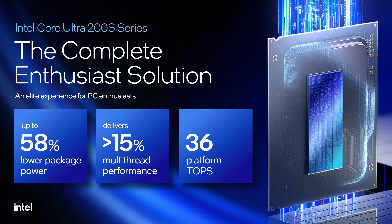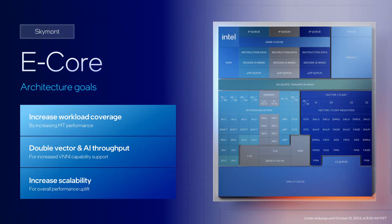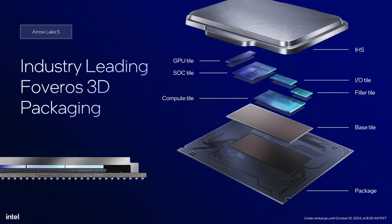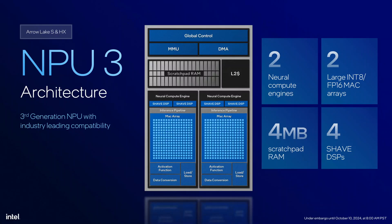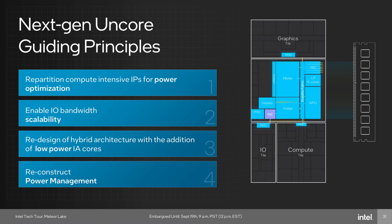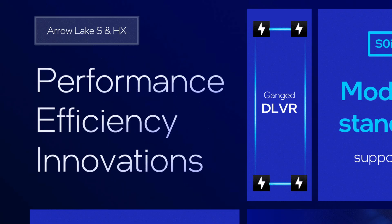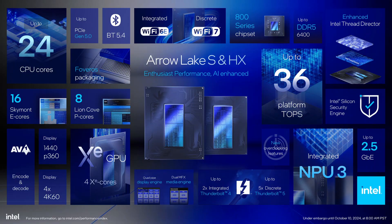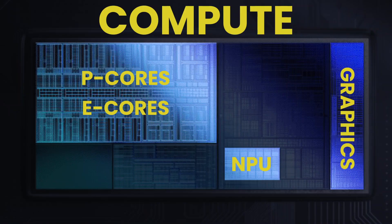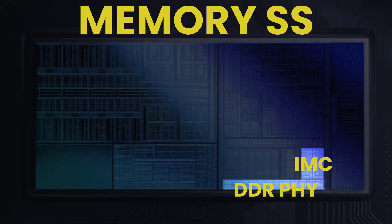Arrow Lake is Intel's revolutionary new processor for mainstream desktop, featuring new P-Cores and E-Cores, disaggregated tile-based 3D Foveros packaging, an integrated NPU for AI acceleration, a next-generation N-Core, DLVR power rails, and so much more. In this video series, I have a look at Arrow Lake performance tuning and overclocking opportunities, covering the compute, the memory subsystem, and the data fabric.